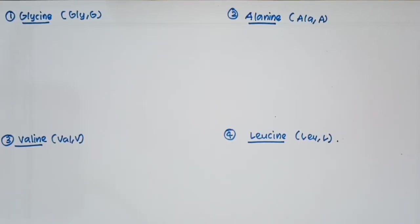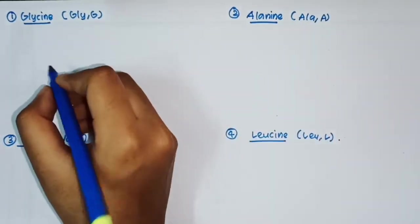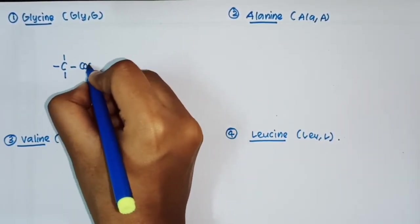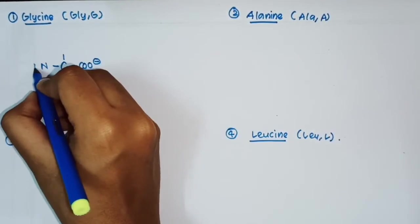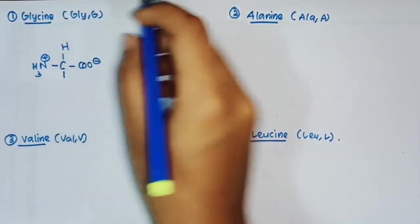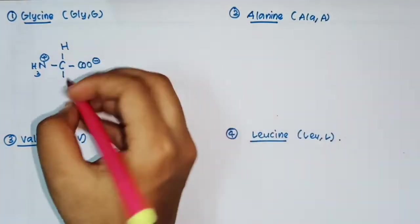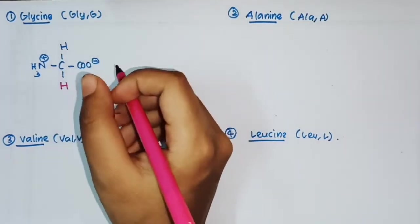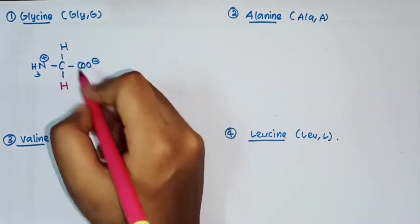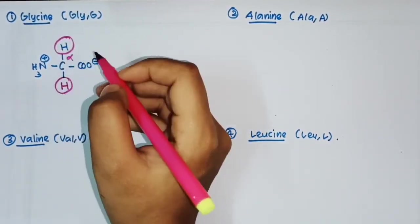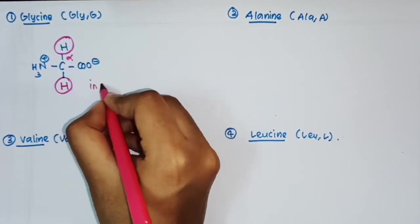The first and simplest standard amino acid is glycine. Here the R group is hydrogen. Except for glycine, all other amino acids are optically active. In glycine there is no chiral center because there are two similar groups attached to the alpha carbon atom, so it is optically inactive.